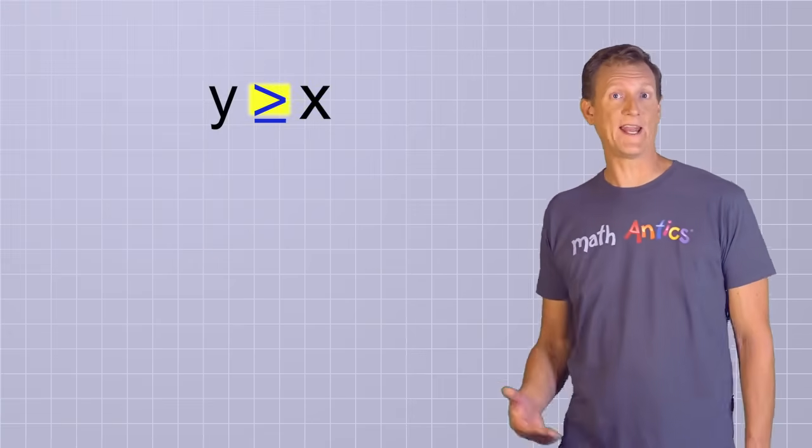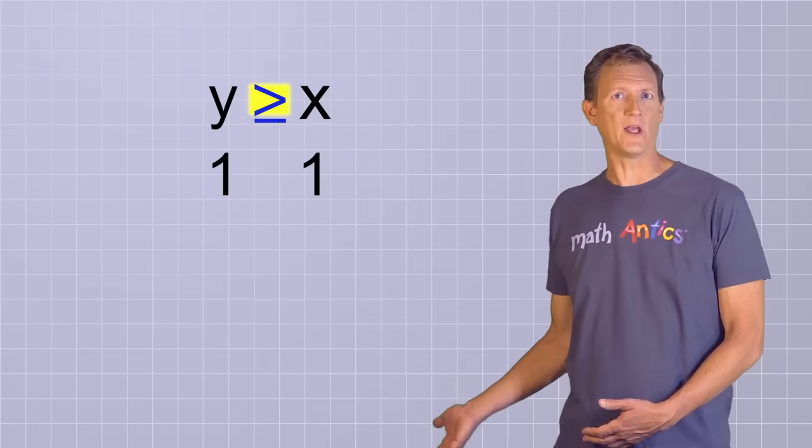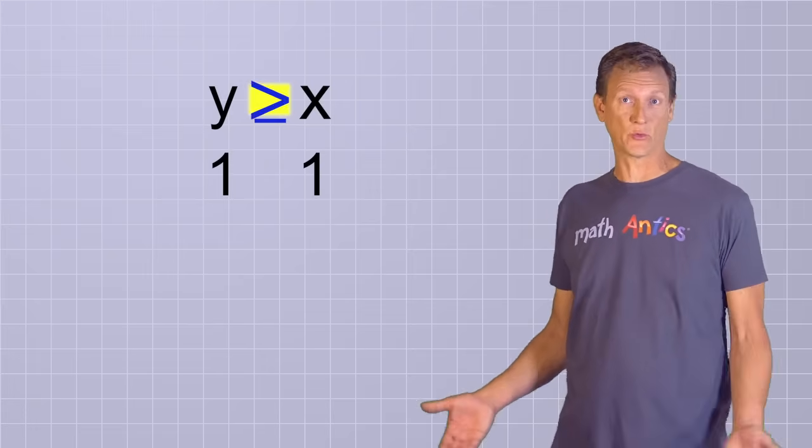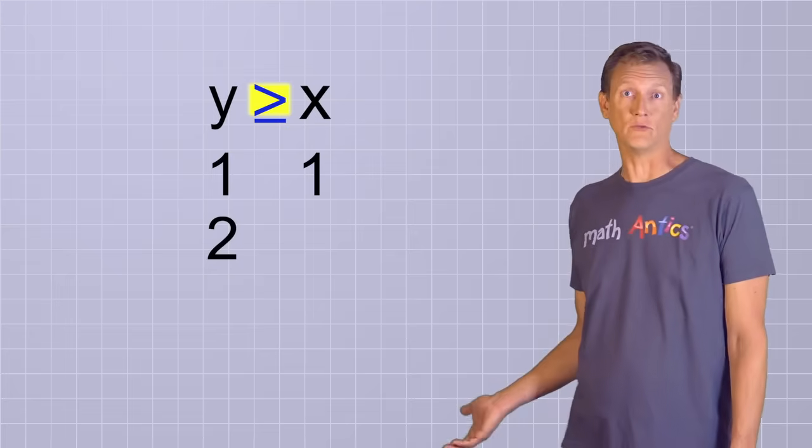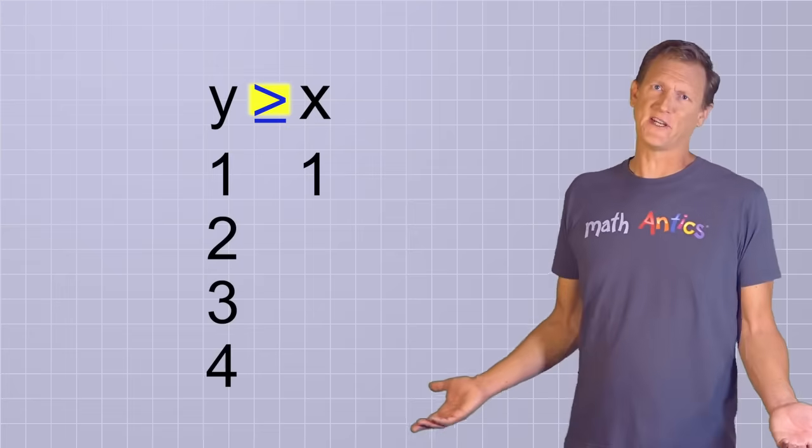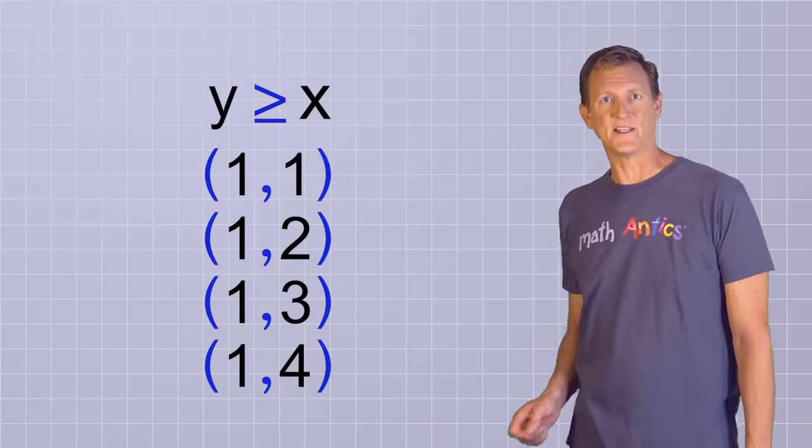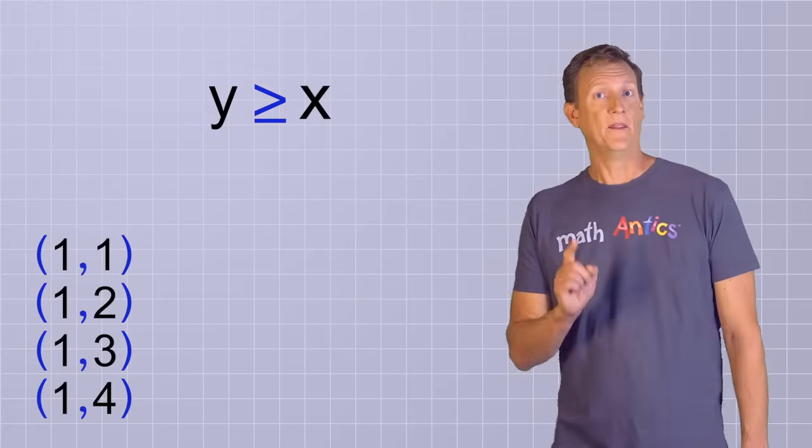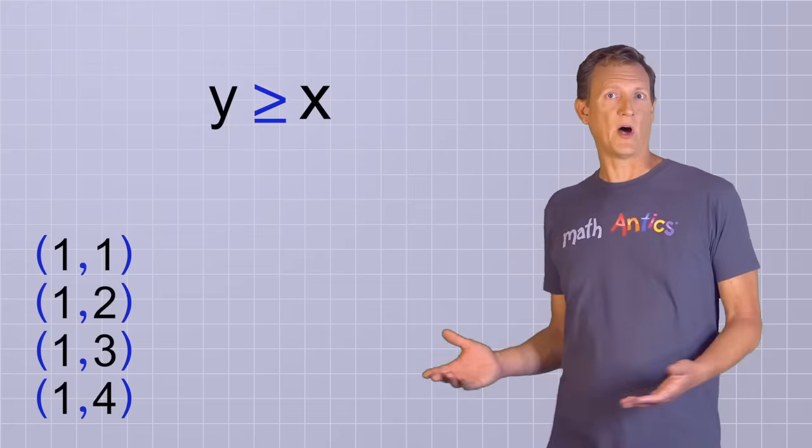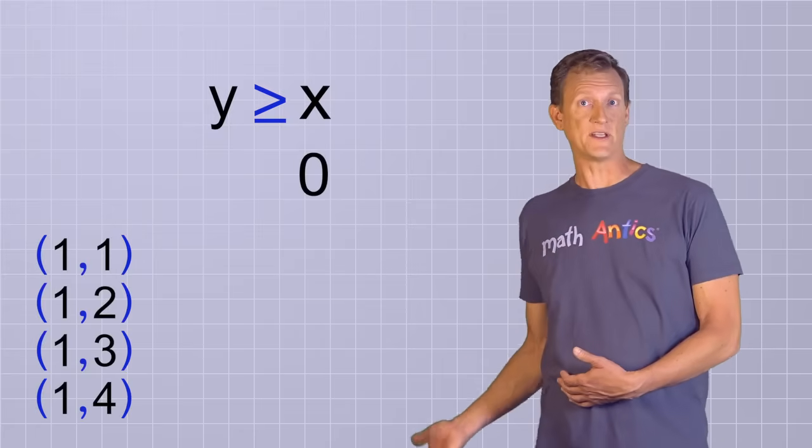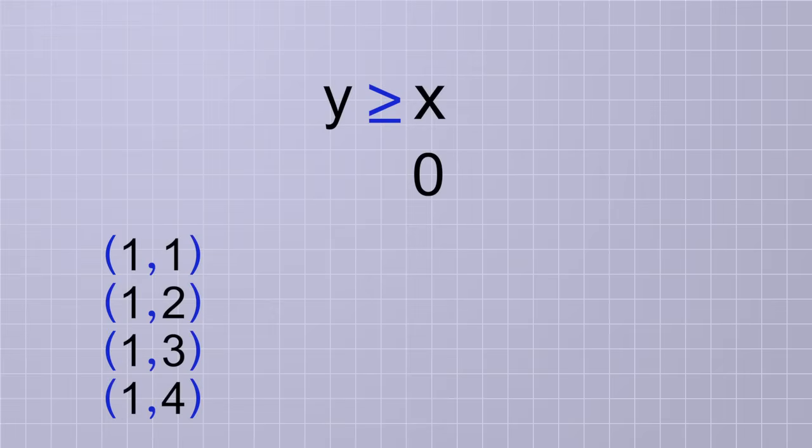For example, if we let x be 1, y could still be 1, but it could also be any number that's greater than 1, like y could be 2, or 3, or 4, just to name a few possibilities. Let's make ordered pairs out of those solutions and set them aside for a second. Then let's ask, what solutions are possible if we let x be 0 instead? Again, y could still be the same as x, 0, but it could also be any value greater than 0, y could be 1, or 2, or 3, and so on.